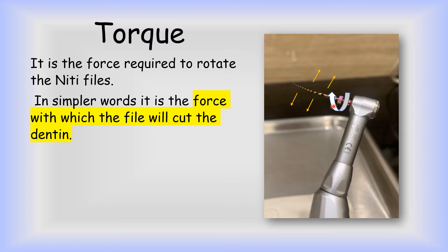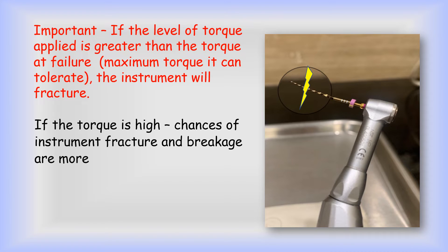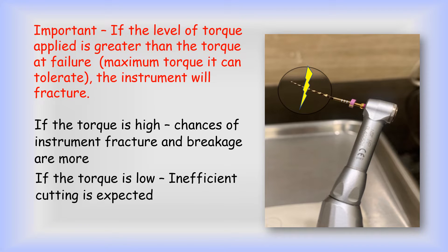It is important that the torque is set as per the manufacturer's recommendations, which is normally just below the limit of elasticity for each file. If the level of torque applied is greater than the torque at failure — that means the maximum torque it can tolerate — the instrument will fracture. If the torque is too high, the chances of instrument fracture and breakage are more. If the torque is too low, then inefficient cutting is expected, so the torque should be set correctly.